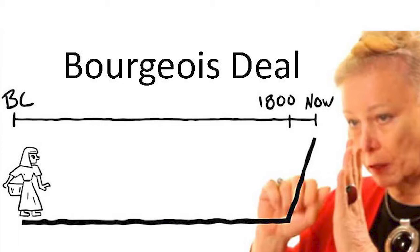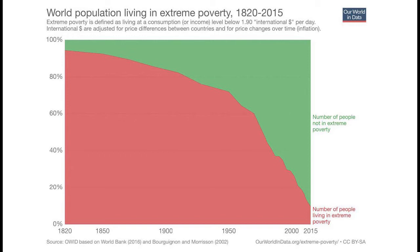This is what Deirdre McCloskey calls the bourgeois deal. By it, she has estimated that the quality of life people in developed economies currently enjoy is 30 to 100 times greater than that enjoyed by almost everyone who lived before the year 1800. This development of ideas has also enabled the vast majority of humans to escape mere subsistence level living, with much of the gains coming in the last 20 to 30 years. This is marvelous — we should all be walking around utterly amazed at the incredible amount of flourishing enjoyed the world over. This is the closest humanity has ever come to getting a free lunch.